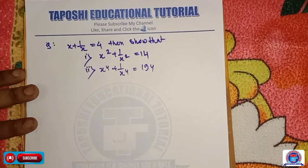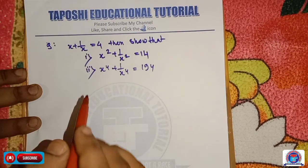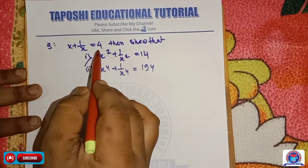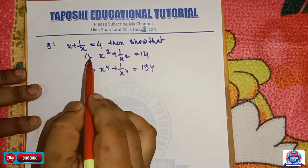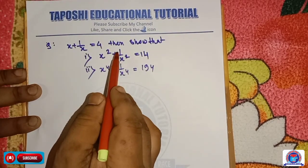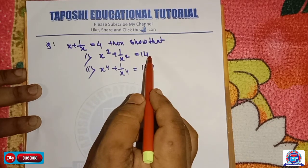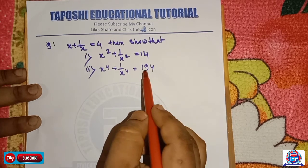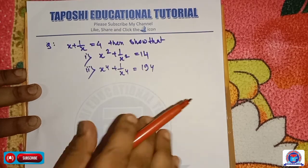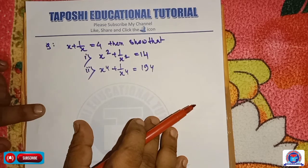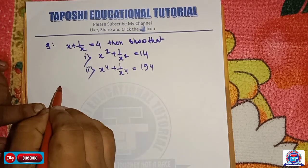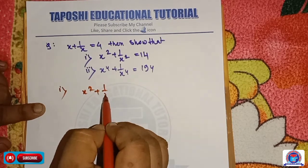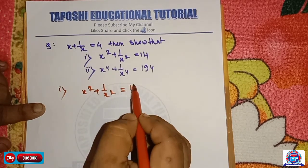Dear student, here it is given another mathematical problem: x plus 1 by x is equal to 4. Show that number 1: x square plus 1 by x square is equal to 14, and number 2: x to the power 4 plus 1 by x to the power 4 is equal to 194. We write the left hand side: x square plus 1 by x square.